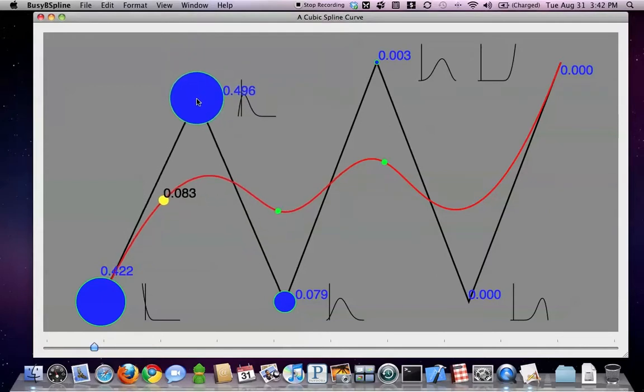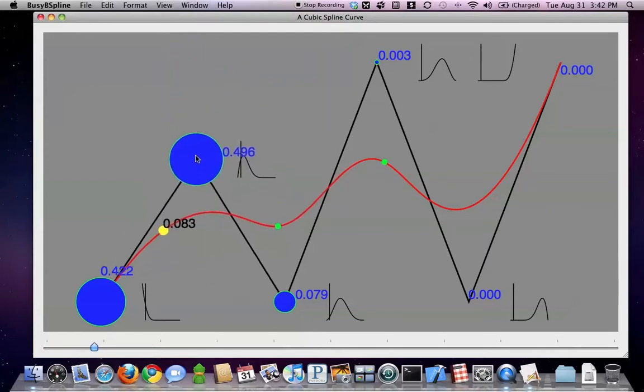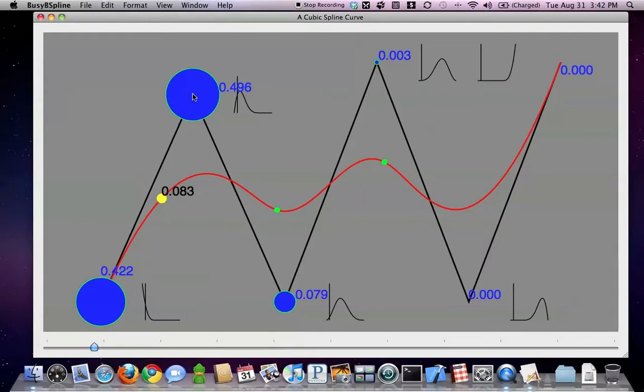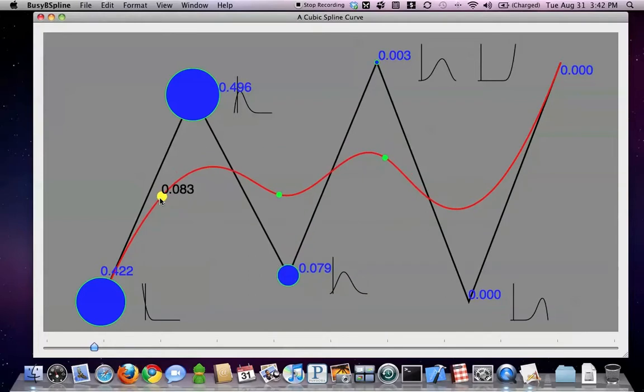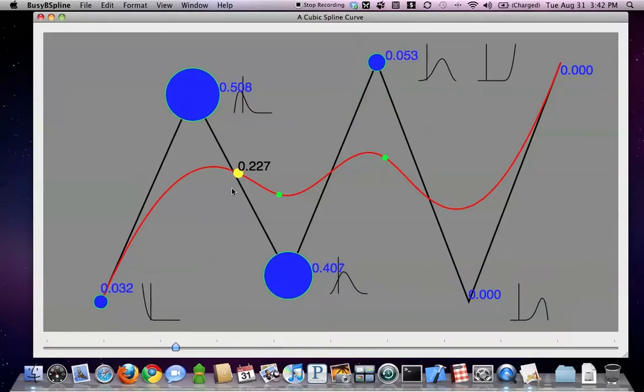When I move a blue point, the parameter value stays the same, but the shape of the curve changes. We can continue to experiment with this spline curve and watch.